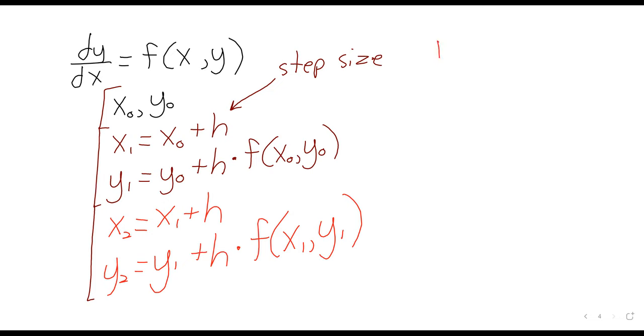If you wanted to write down x sub n, it's x sub n minus 1 plus h, y sub n is y sub n minus 1 plus h times f of x sub n minus 1, y sub n minus 1.